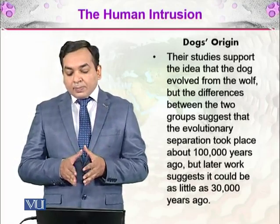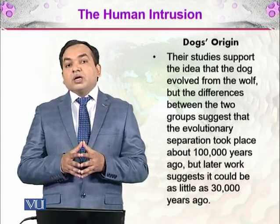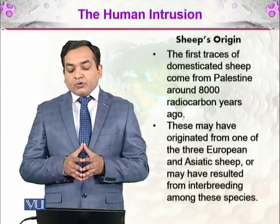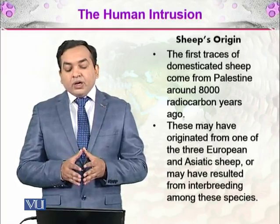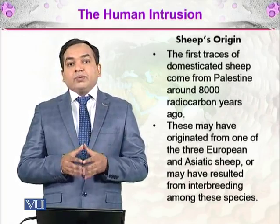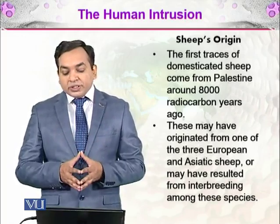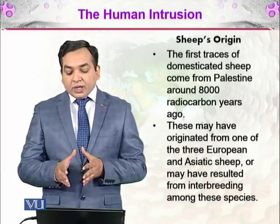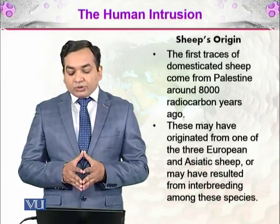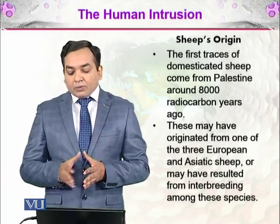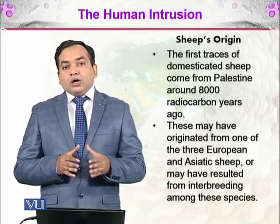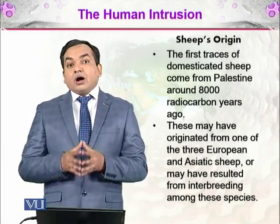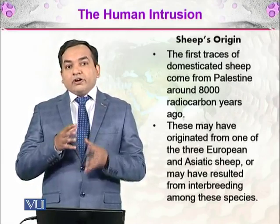The first traces of domesticated sheep come from Palestine, around 8,000 radiocarbon years ago. After discussing dogs, there is also sheep and goats. The sheep developed 8,000 years ago in the Palestine region may have originated from one of three European and Asiatic sheep species, or may have resulted from interbreeding among these species found close to Palestine.